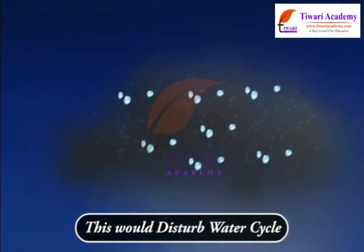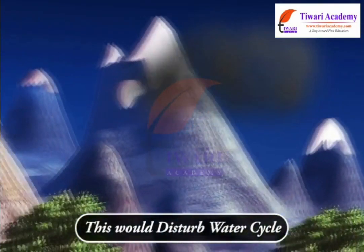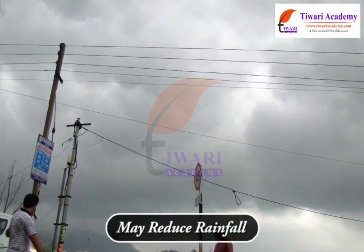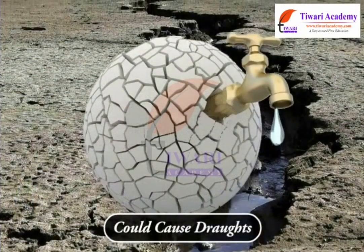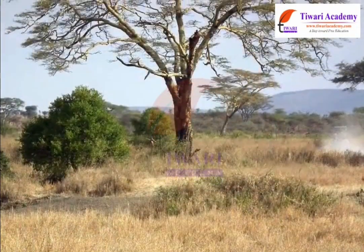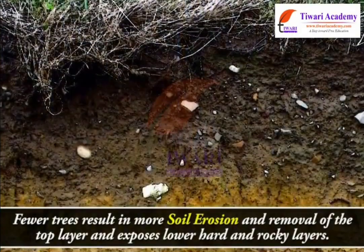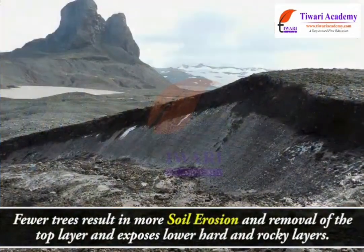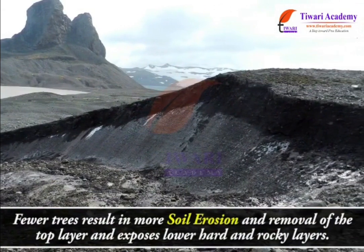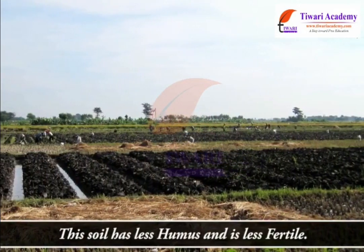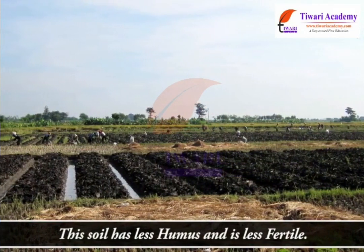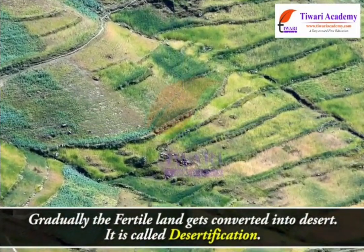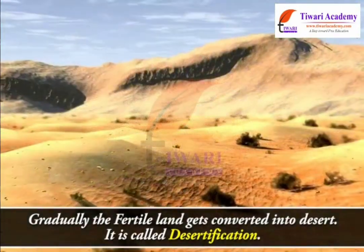Global warming disturbs the water cycle and may reduce rainfall, and could cause droughts. Fewer trees also result in more soil erosion, removing the top layer and exposing the lower hard and rocky layers. This soil has less humus and is less fertile. Gradually, the fertile land gets converted into desert — this is called desertification.